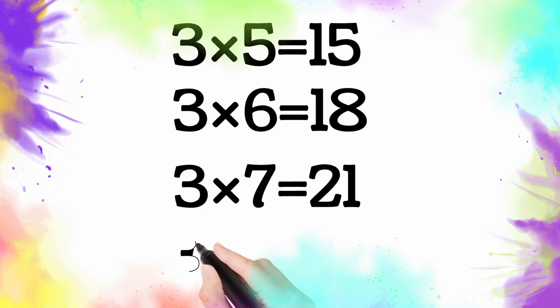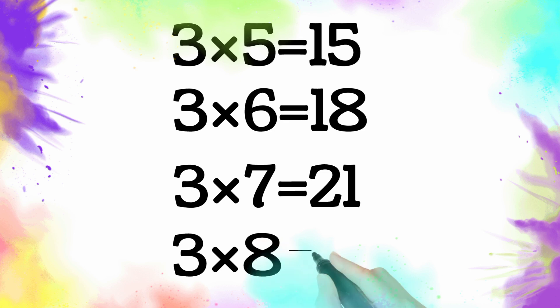Three multiply by eight is equal twenty-four. So three eight, the twenty-four.